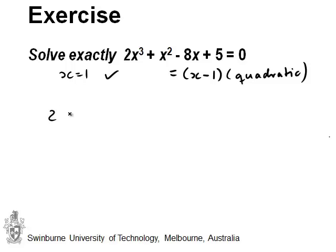So first of all, we write our cubic: 2x cubed plus x squared minus 8x plus 5. This goes here. We will then write x minus 1 here, and then we start dividing.